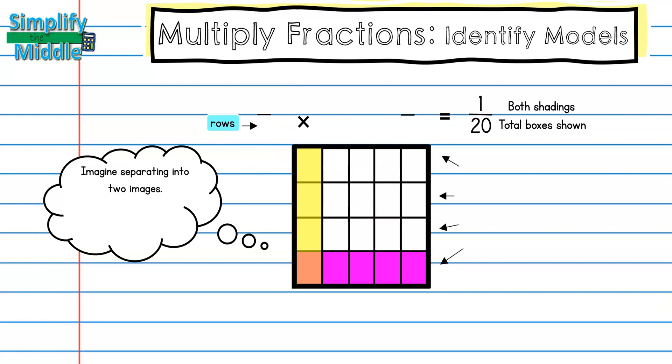Each arrow is representing a row, so I can see I have four total rows. That's the denominator for my first factor. Now that I know how many rows there are, I should ask myself, how many rows out of four are shaded? That's going to represent the numerator for my first factor.